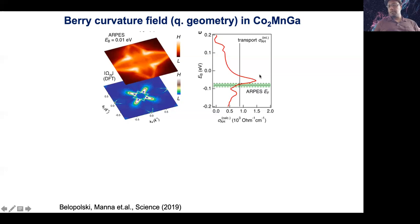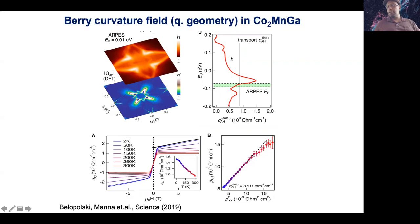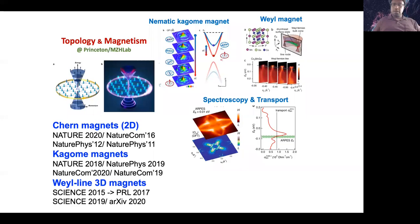Subsequent to our ARPES and theoretical prediction, our colleague Fausto Manna did the transport measurement and found the anomalous Hall conductivity to be 870 Ohm⁻¹cm⁻¹ — right within the error margin. This convinced me that spectroscopy and transport are in agreement. If we had missed a band, the Berry curvature field would have changed dramatically and we would not have been able to match transport. This also reflects my group's new effort to set up transport measurements ourselves for what I call spectroscopy-transport correspondence.